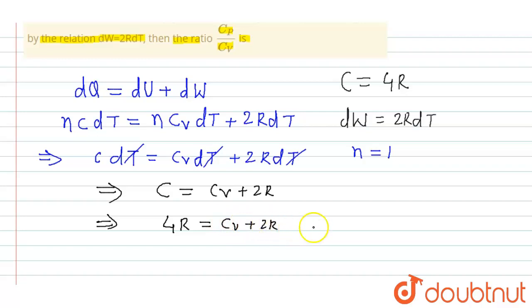So 4R equals Cv plus 2R which implies the value of Cv is 4R minus 2R that is 2R.